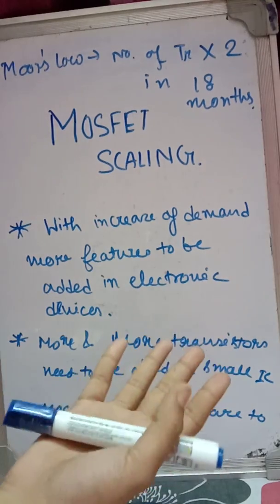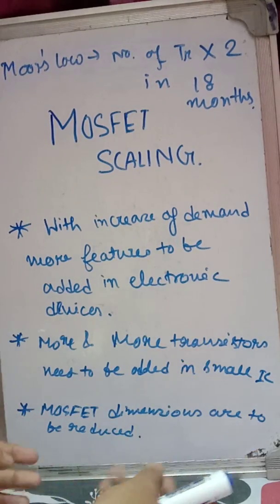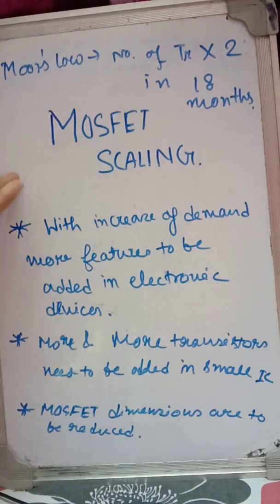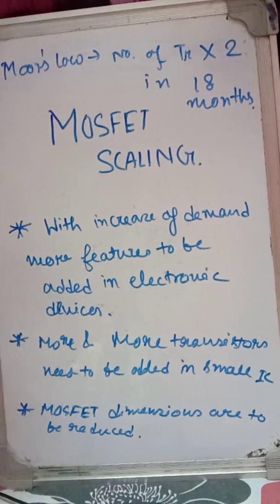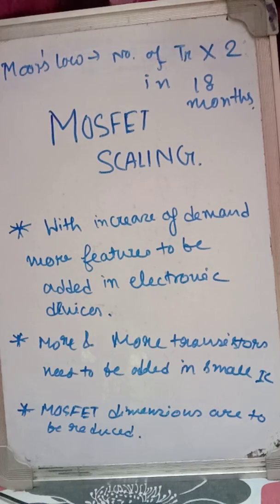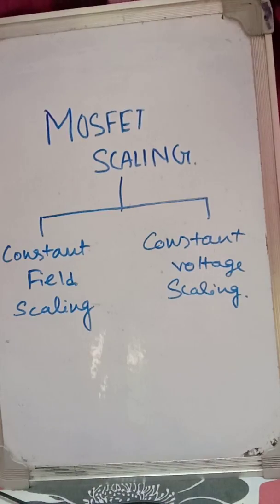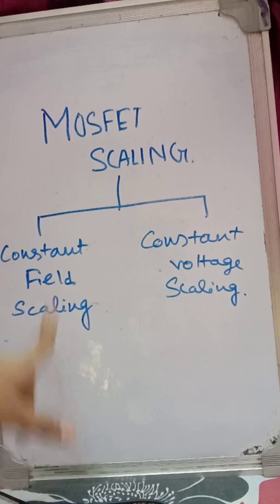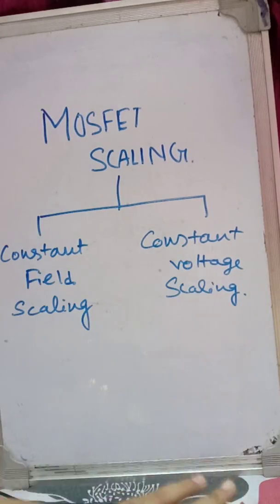So you understood what is MOSFET scaling — it is about the reduction of the dimensions of the MOSFETs. We need this because we want more features in devices and we have to add more transistors. MOSFET scaling is done in two types: one is constant field scaling and another one is constant voltage scaling.